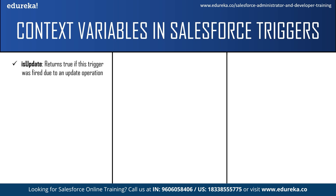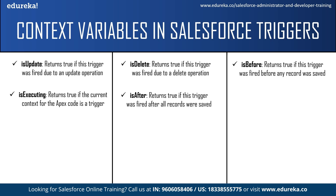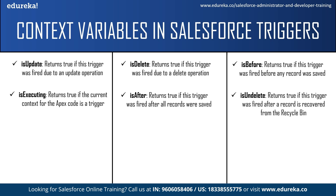Next is isDelete — this returns true if the trigger was fired due to a delete operation. After this we have isBefore — this returns true if the trigger was fired before a record was saved to the database. Next we have isExecuting — this returns true if the current context for the Apex code is a trigger and not a Visualforce page, web service, or API call. The next context variable is isAfter — this returns true if the trigger was fired after all records were saved to the database. Next is isUndelete — this returns true if the trigger was fired after a record was recovered from the recycle bin.